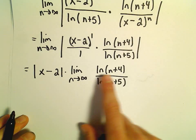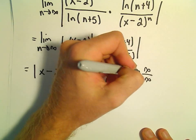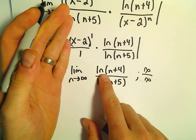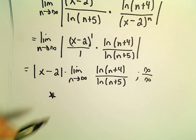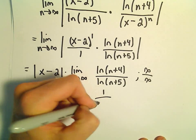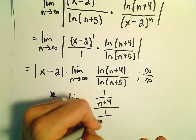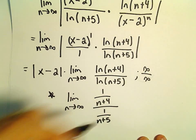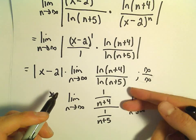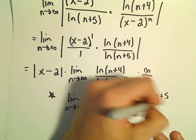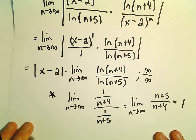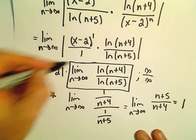As n goes to infinity, we're going to get infinity over infinity for our limit. So I'm going to compute the limit as n goes to infinity of the natural logarithm of n plus 4 over n plus 5 using L'Hopital's rule. If we do L'Hopital's rule, we would get 1 over n plus 4 and then 1 over n plus 5, but we could just flip and multiply. So we would multiply by n plus 5 over 1, giving n plus 5 over n plus 4, and as n goes to infinity, this limit is just going to equal positive 1. So this whole limit is just going to equal 1.